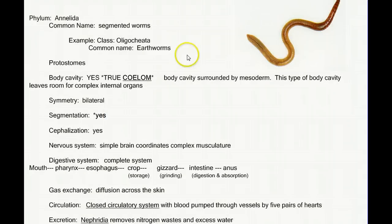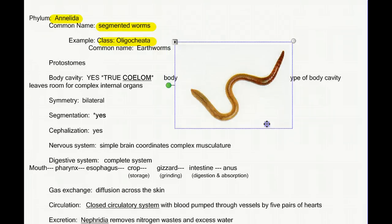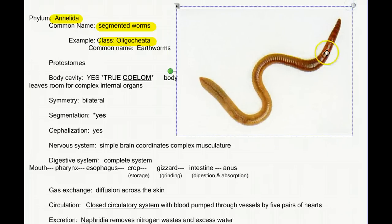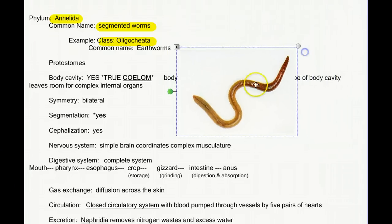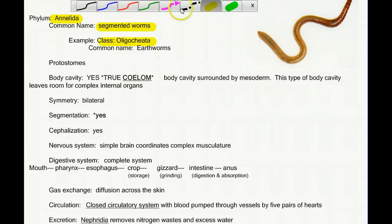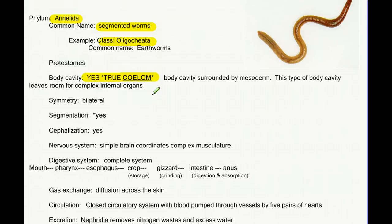For the segmented worms, we're going to use earthworms as kind of the poster child for this whole group. The earthworms are in the class Oligochaeta. The phylum name is Annelida. We call these the segmented worms. And if you look at the picture, it's pretty obvious to see why we would call them segmented worms. You can see very distinctive segmentation. Then, like we know, this is our first of our coelomates. So a big evolutionary step forward is that we have, for the first time, a true coelom, a body cavity surrounded on all sides by mesoderm, which allows for room for complex internal organs.